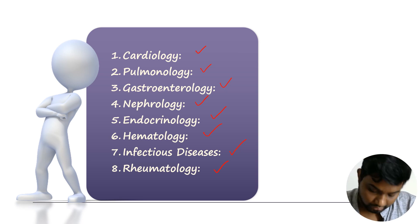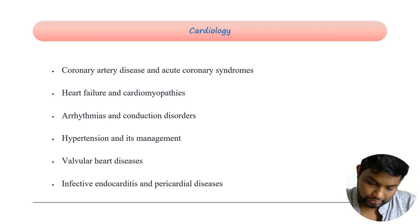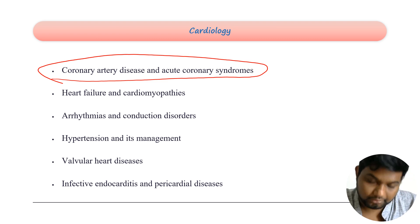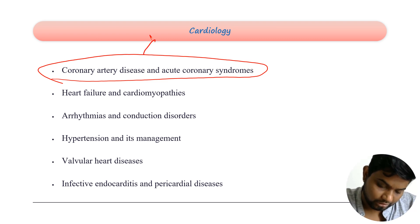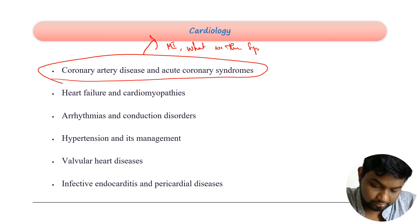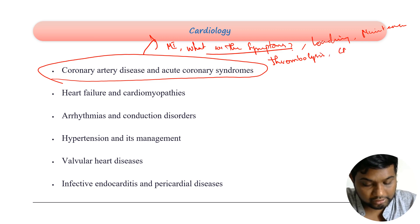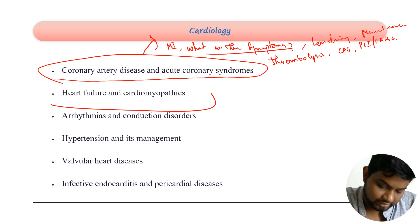Speaking about cardiology, the very first topic is CAD and ACS. You have to remember what type of MI and the symptoms, interventional measures, loading dose and maintenance dose, when do you thrombolyze and when do you not thrombolyze — the thrombolysis criteria — and the CAG pattern and PCI or CABG pattern. You have to remember all of this.